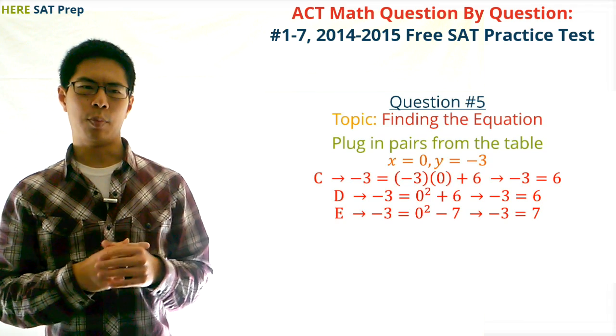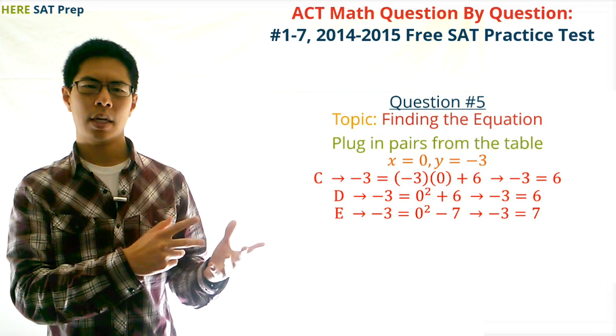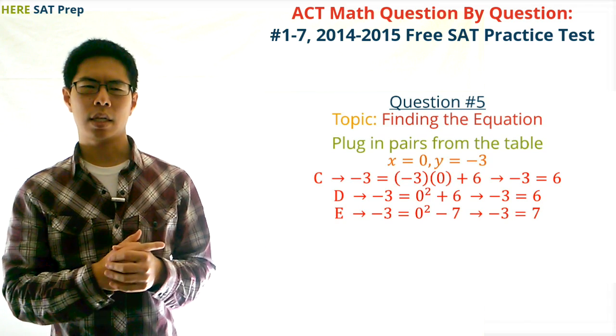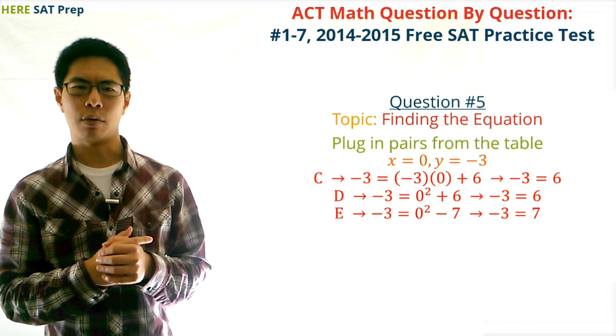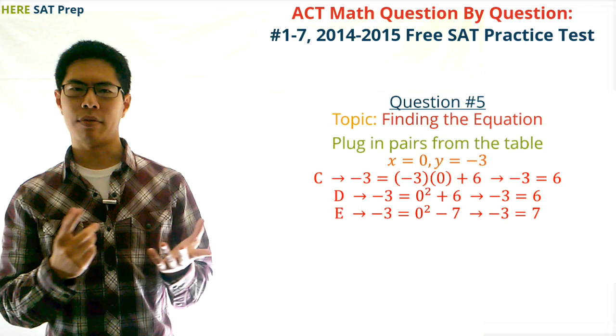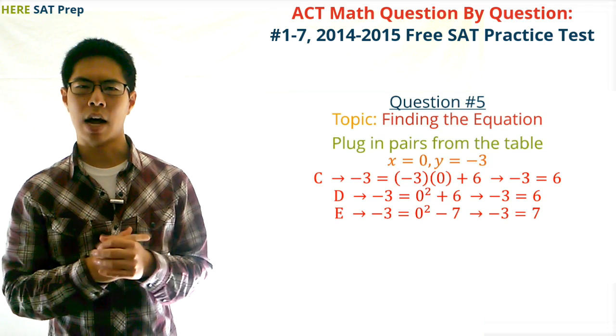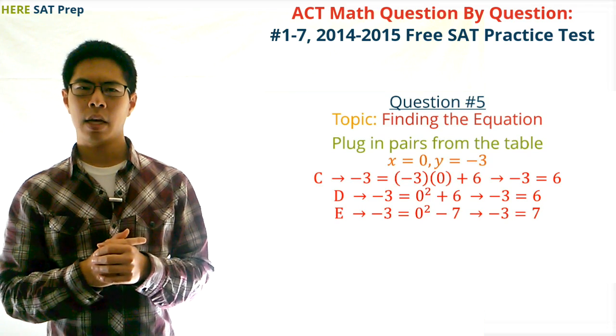For C and D, we'll end up with negative 3 equals 6, and for E we'll end up with negative 3 equals negative 7, which are obviously wrong.